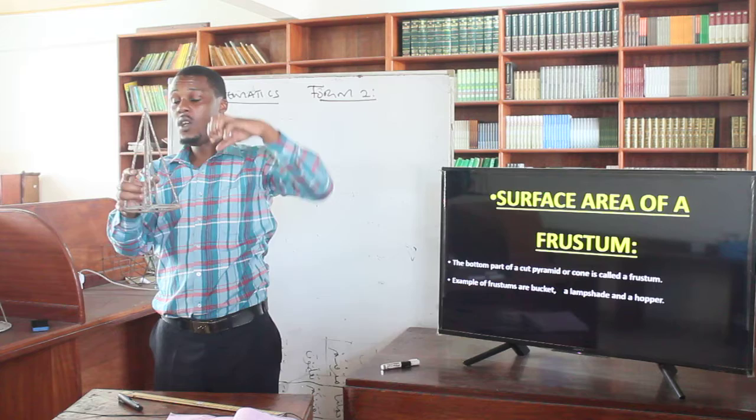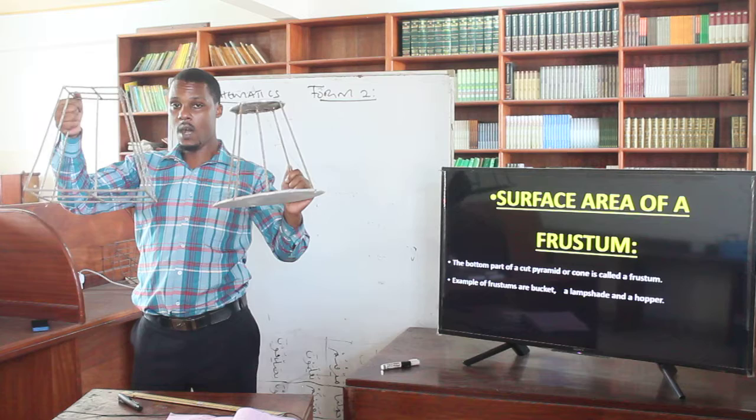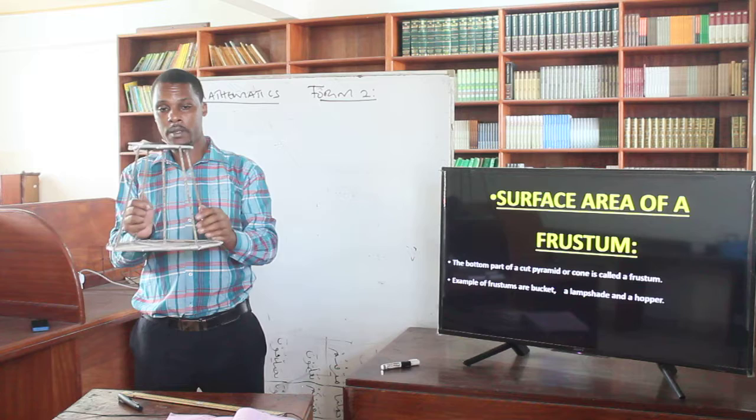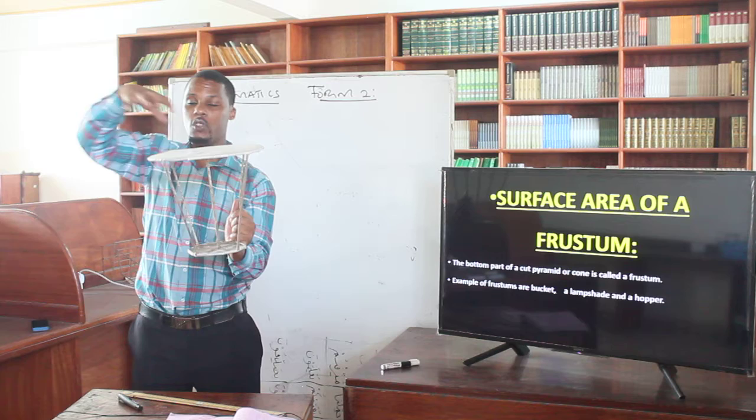Here we have a cone. I cut the top part and remove it — what it is going to be is a frustum. A frustum from the cone and a frustum from the pyramid — that is going to be our argument today. When we talk about the frustum, in the case of the surface area of the frustum, we are going to be discussing three issues.